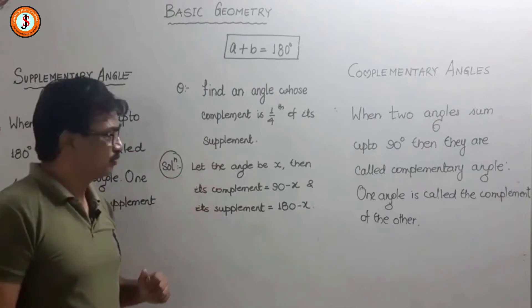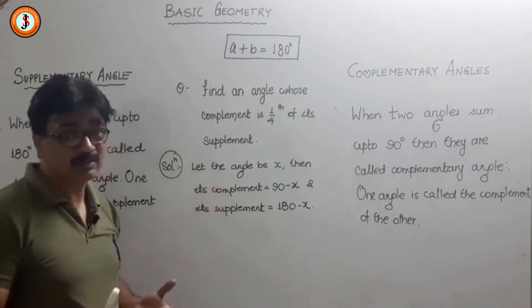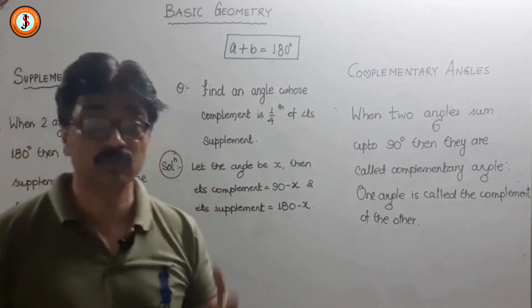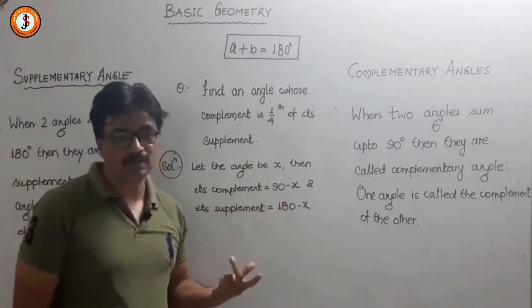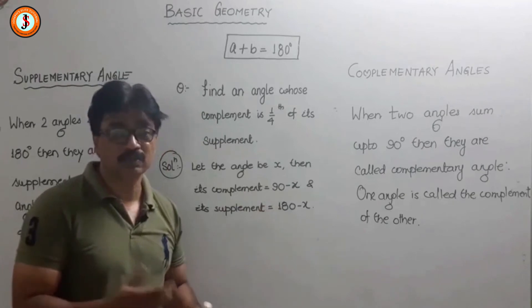Let the angle be x. Since we have the relationship between supplement and complement, the complement is 90 minus x and supplement is 180 minus x. We make an equation from this.